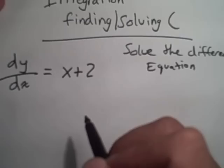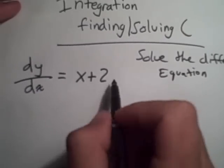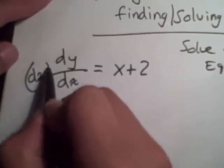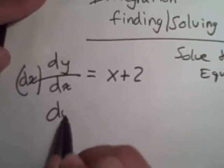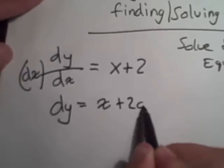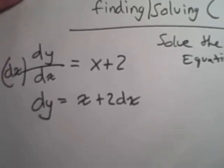Now how do we do that? First step in solving the differential equation is we have to separate the y's and the x's. So what we're going to do is multiply the dx to the other side. So we're left with dy equals x plus 2 dx.